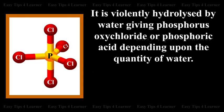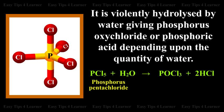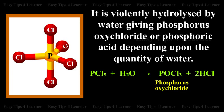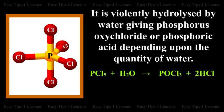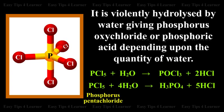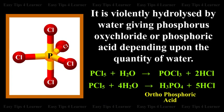It is violently hydrolyzed by water giving phosphorus oxychloride or phosphoric acid depending upon the quantity of water. Phosphorus pentachloride plus insufficient water gives phosphorus oxychloride plus hydrochloric acid. Phosphorus pentachloride plus excess water gives orthophosphoric acid plus hydrochloric acid.